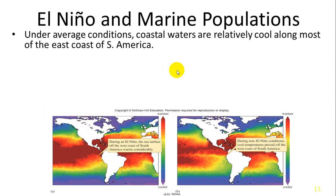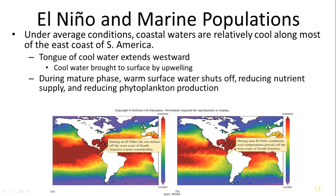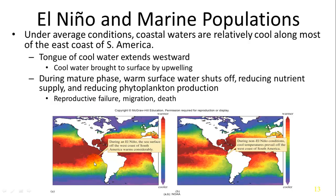Under average conditions, coastal waters are relatively cool, which as we know means they are more nutrient-rich and allows for upwelling of nutrients along the Pacific coast of South America. But during El Niño's mature phase, much warmer water prevents cycling of nutrients and upwelling, resulting in less phytoplankton production. This eventually causes reproductive failure in organisms that rely on those phytoplankton, migration of other organisms, and death.